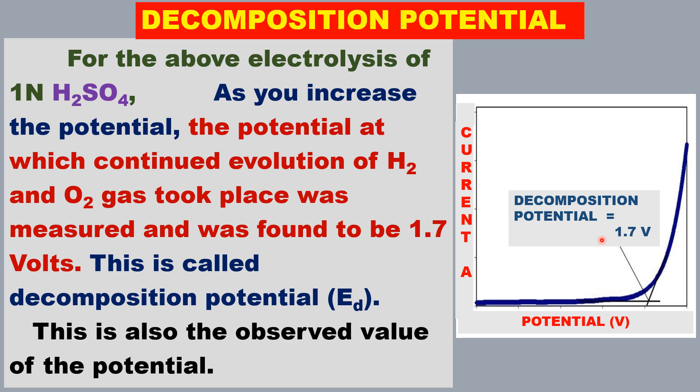In the case of deposition of a metal — for example, when silver ion is deposited — it is called the deposition potential. In this case, water is decomposed, so it is called the decomposition potential. This potential was measured to be 1.7 volts. This is also called the observed or experimental value of the decomposition potential.